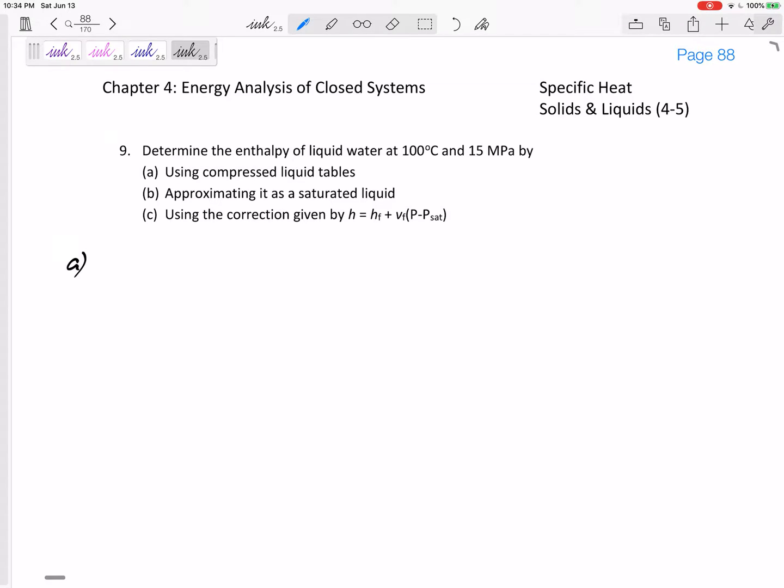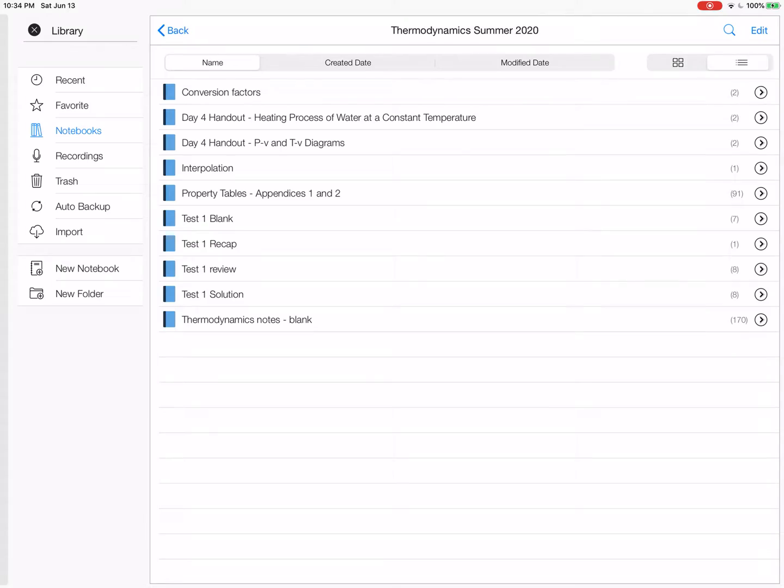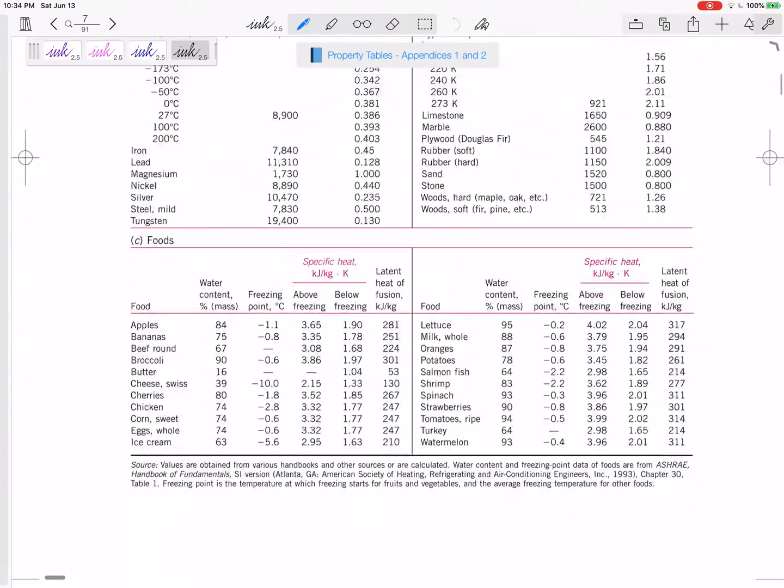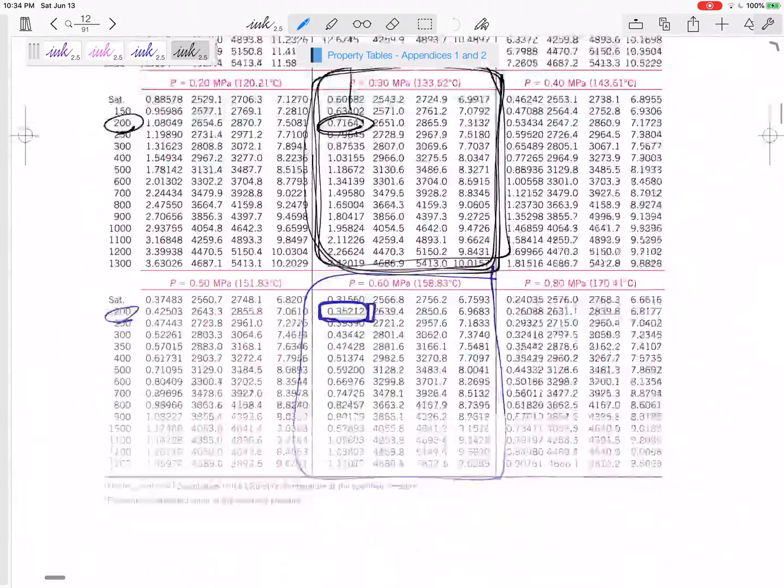All right, so because it's water we have compressed liquid tables, table A-7. So maybe it's in our property table, 100 degrees C, 15 MPa. Let's go to our property tables. It's water, so I'm looking at 4, 5, 6, 7.